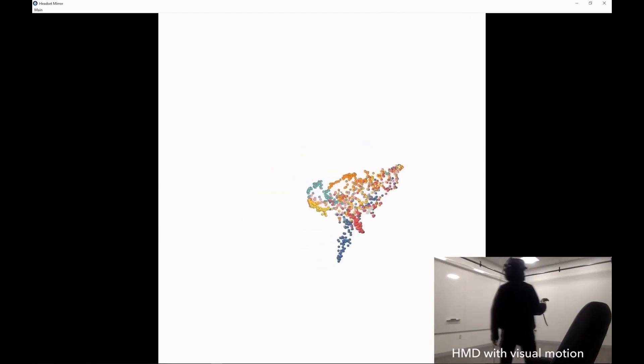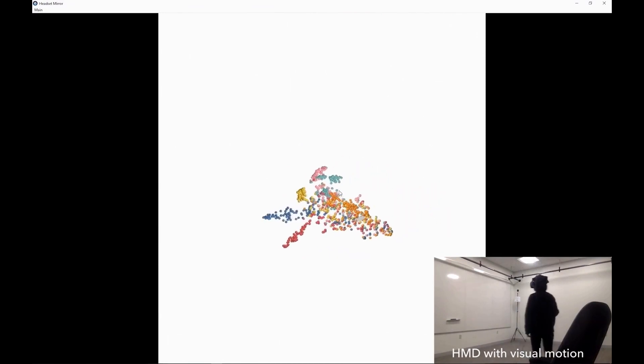The second condition is a VR condition with visual motion. The user can rotate the scatter plot using the VR controller. She can also walk in the room.